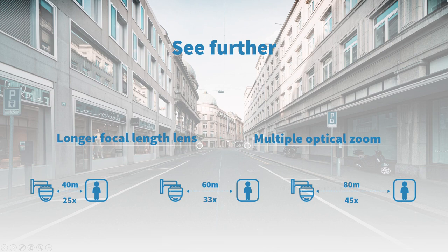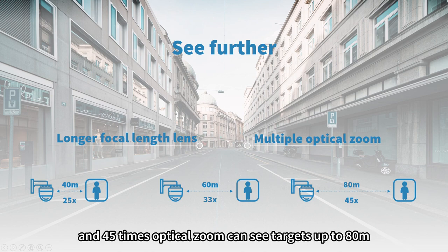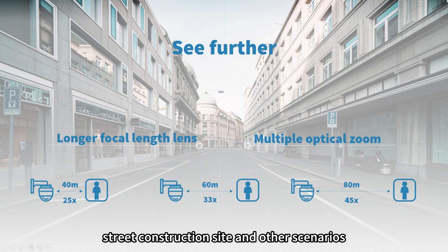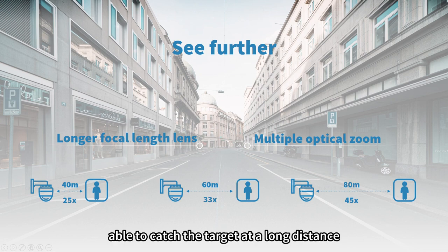Typically, 25x optical zoom can see targets up to 40 meters away, 33x optical zoom can see targets up to 60 meters away, and 45x optical zoom can see targets up to 80 meters away. This feature makes PTZ very suitable for road, street, construction site, and other scenarios where one camera can catch a target at a long distance.